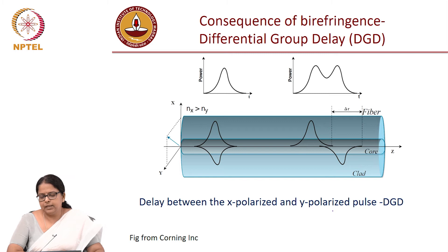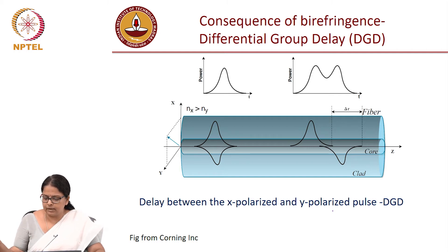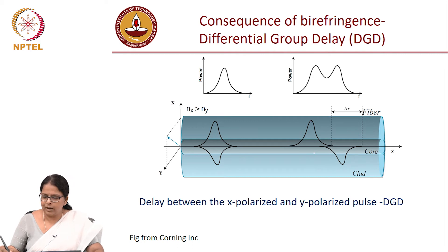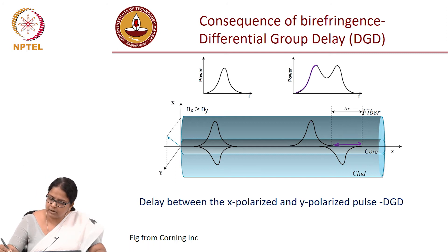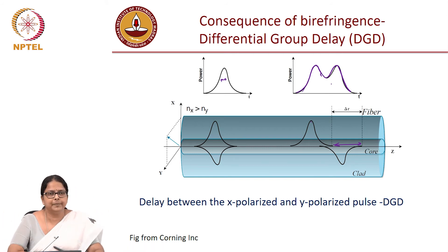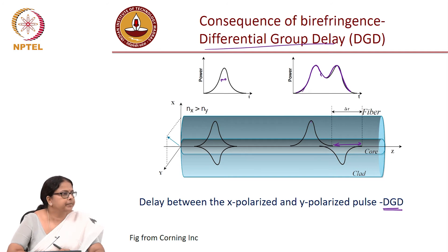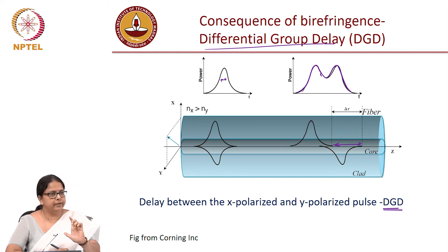The consequence is that if NX is greater than NY, one polarization travels faster than the other. So you start with a single pulse, but when it arrives there is a time delay between the NX and NY components — you first receive the faster-propagating field, then the slower-propagating field, causing the pulse to spread. This is called DGD, or differential group delay, meaning the group velocity delay for the two polarizations is different.